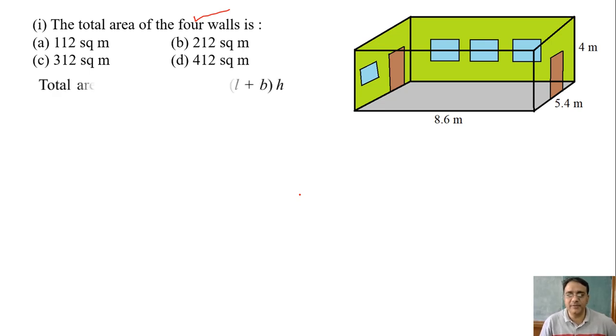2 into (l + b) into height. So 2 into (8.6 + 5.4). If we add these two we'll get 14, 14 into 4 is 56, into 2 is 112. So which option is the correct one? Option A, right, option A.